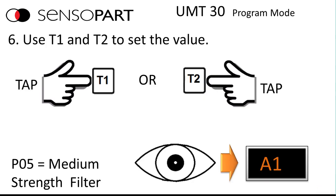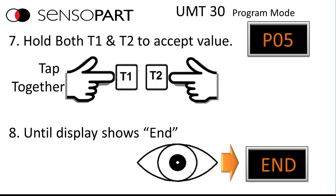Now you can change the value. So you tap T1 and T2 to change the value, in this case we'll choose P05. Once you have P05, your desired parameter set, again you tap both together and the display will show end.